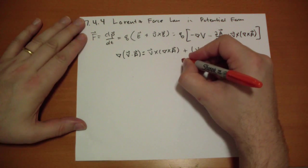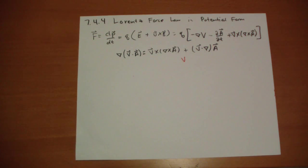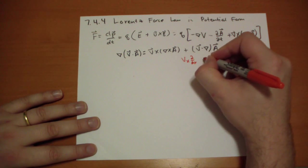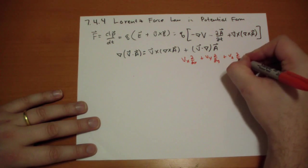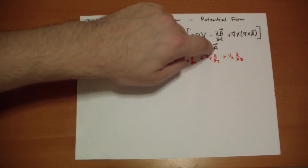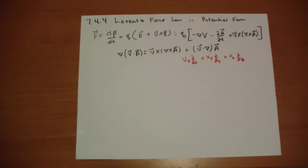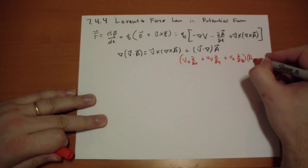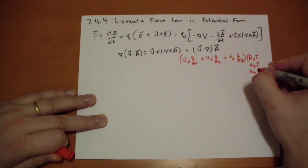V dot del — this is V vector, not V the scalar. This is the velocity, not the potential. V dot del equals Vx d/dx plus Vy d/dy plus Vz d/dz. So apply that to A: you're taking this scalar quantity and multiplying each component of A, ending up with this times Ax î, Ay ĵ, and Az k̂.